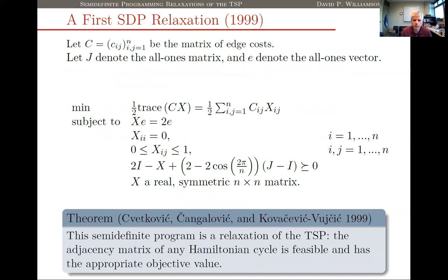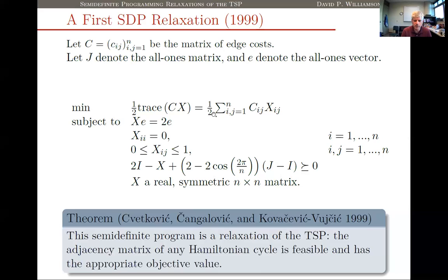Here's the first SDP relaxation of the traveling salesman problem that I'm aware of, introduced by three authors in 1999. What's the relaxation? They show that if you set X to be the adjacency matrix of any Hamiltonian cycle, then it's a feasible solution to this SDP with the cost of the corresponding tour. For every pair of adjacent vertices i and j in my tour I set X_ij to one, all other entries to zero. Since I repeat entries X_ij and X_ji, I have a factor of 1/2 out front to get the cost of the tour.